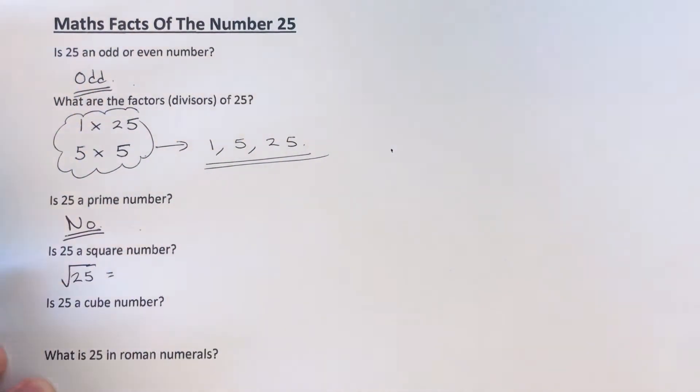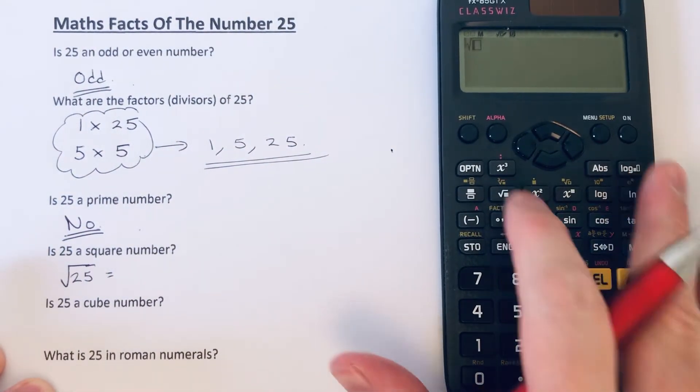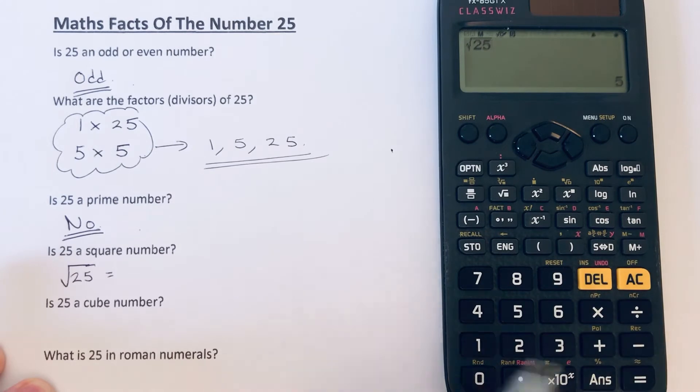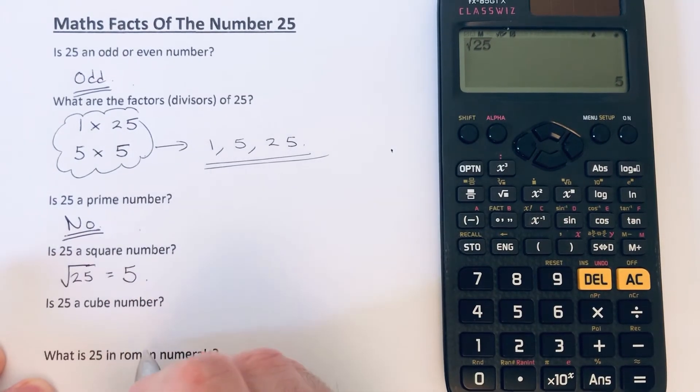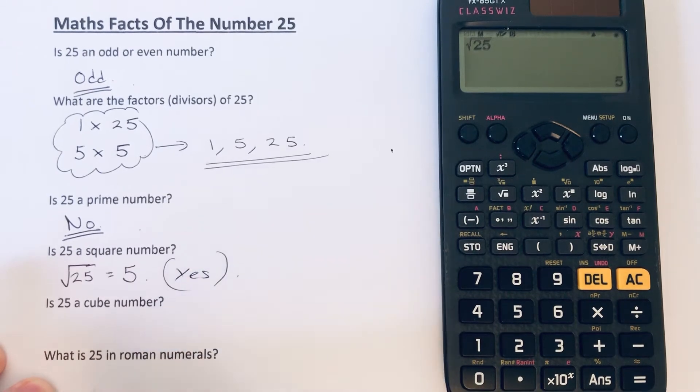...is 5. So it has come out to a whole number, so the answer is yes, because 5 times 5 is 25.